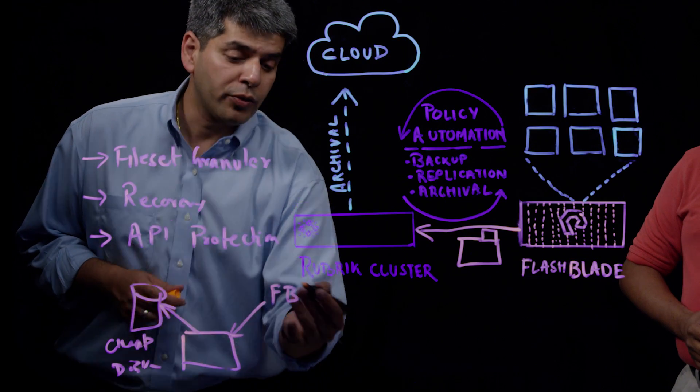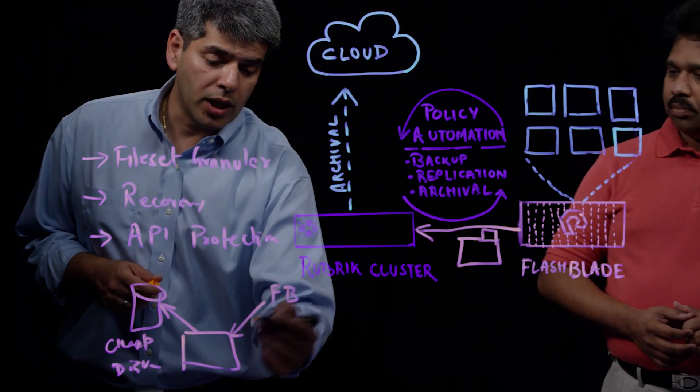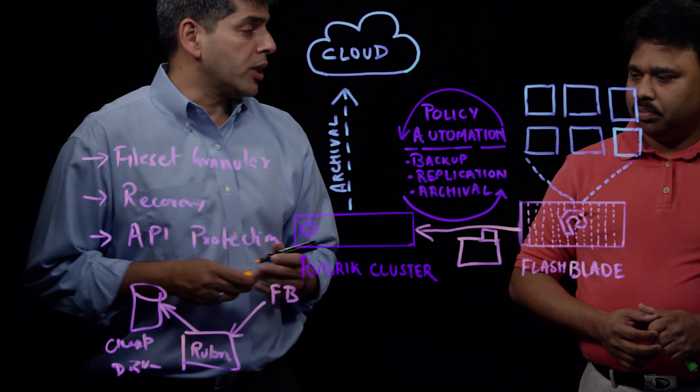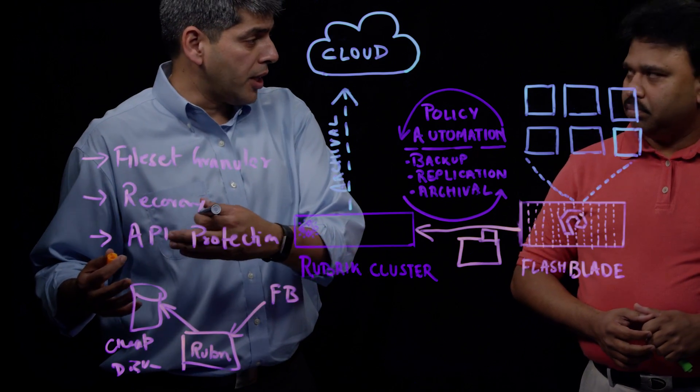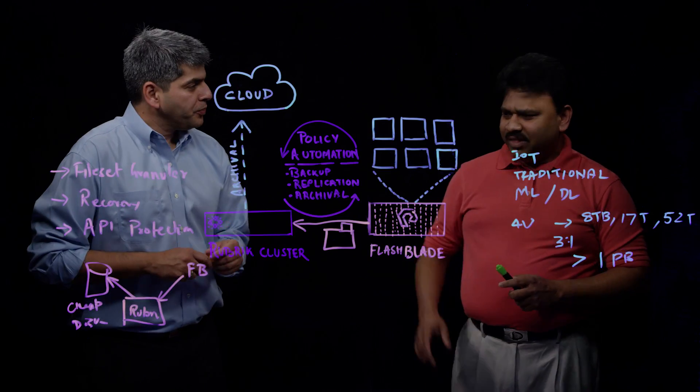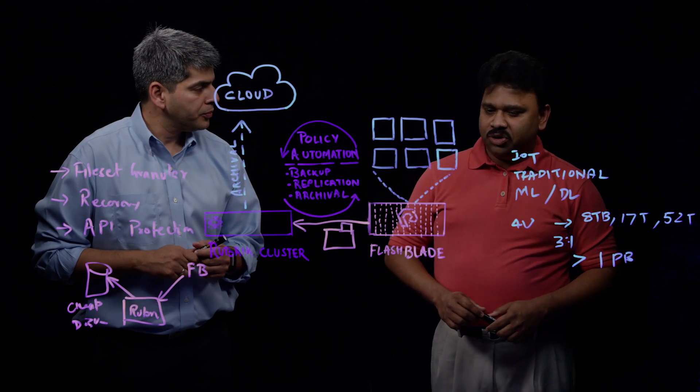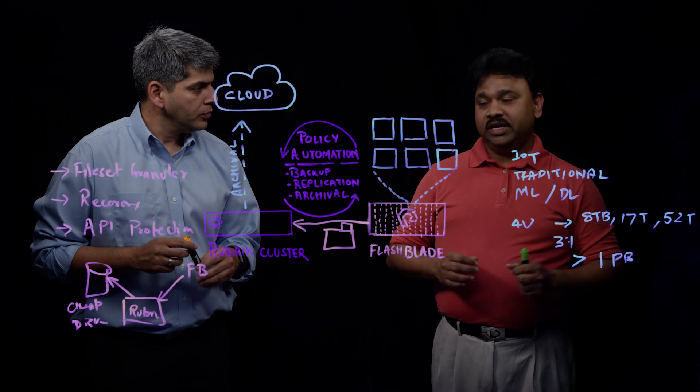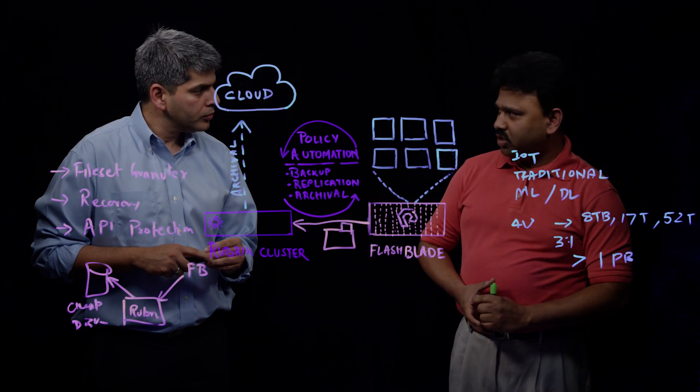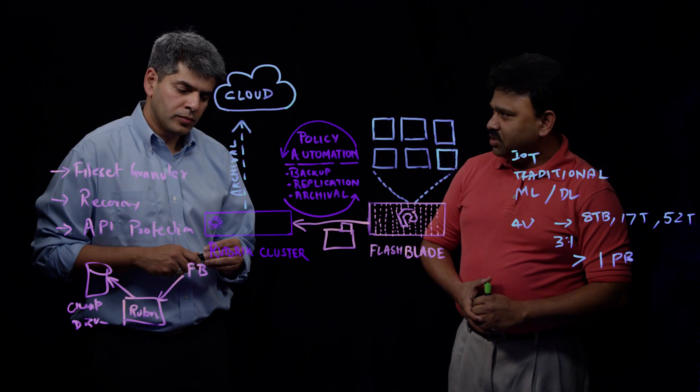So Flash Blade can be the source for our data protection. Rubric cluster sits here and then it protects it onto another NAS device or restores on the other NAS device as well. I think that will come very handy for some of our customers who have to store ages and years worth of data where they can archive it to a cheaper data storage system for compliance reasons.